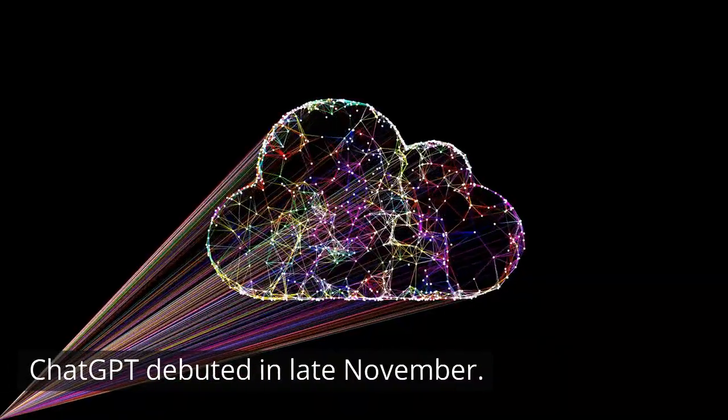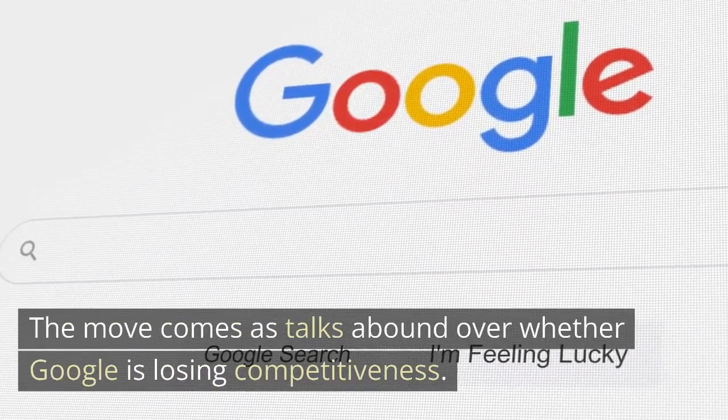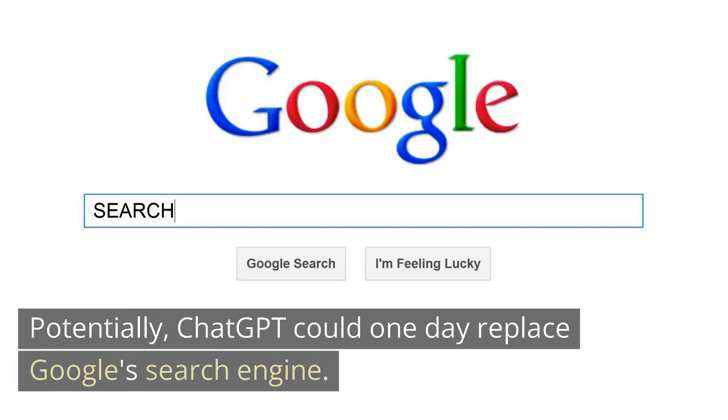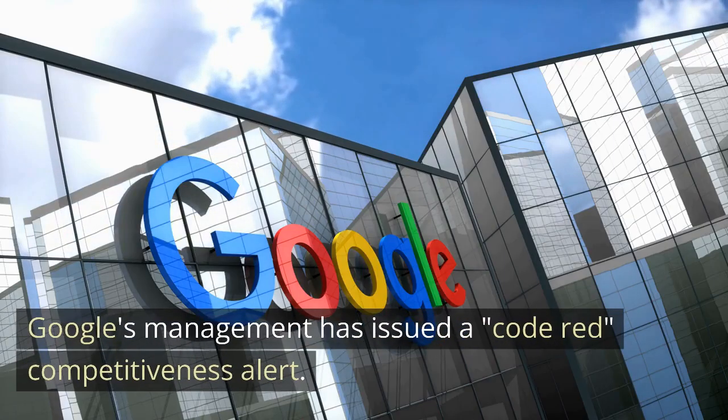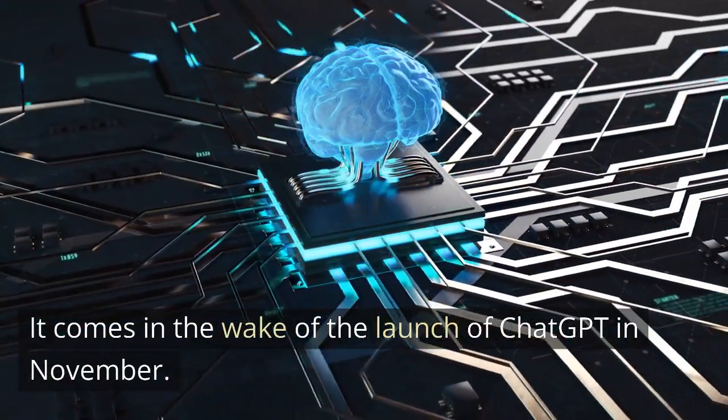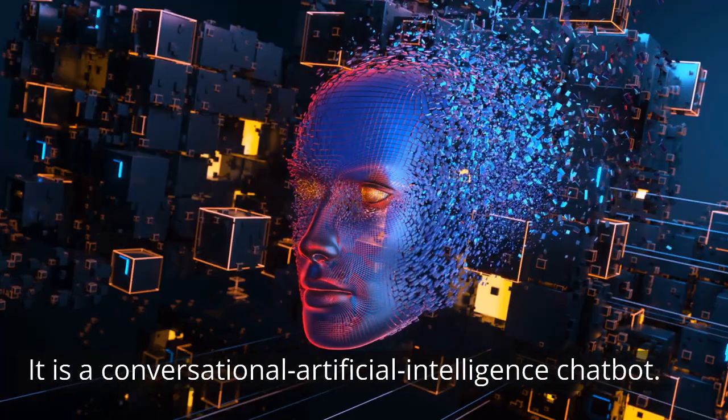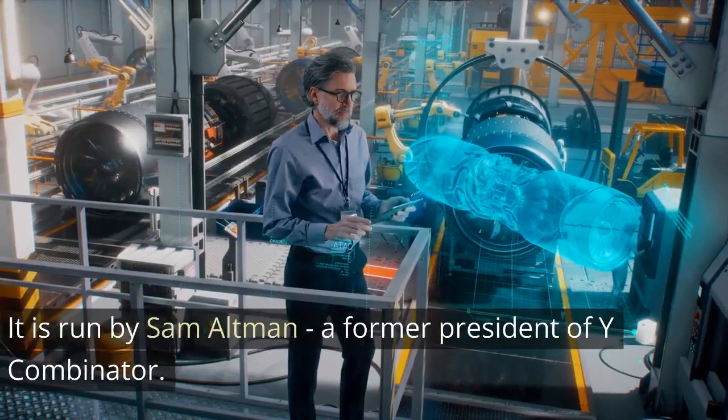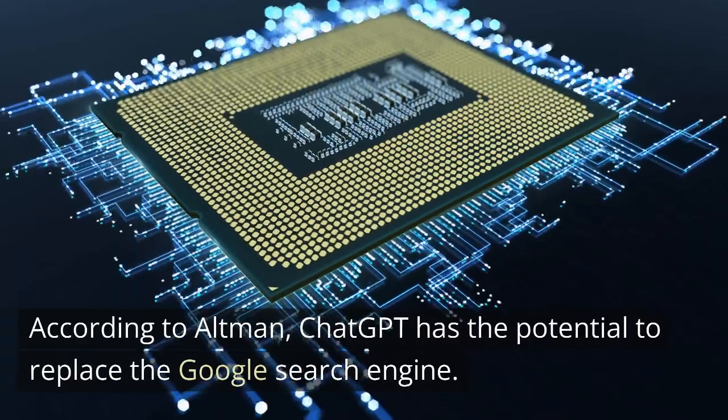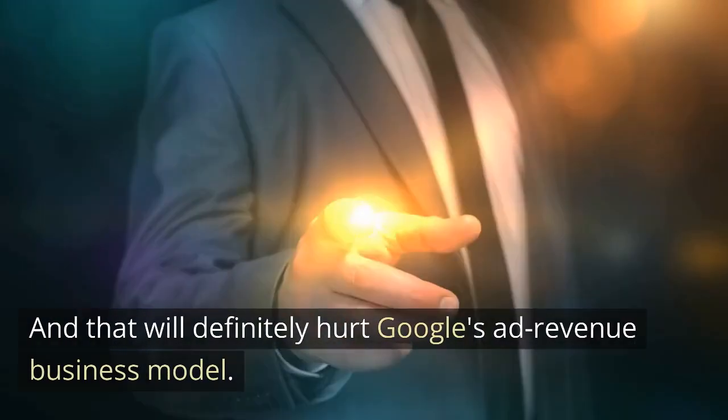ChatGPT debuted in late November and it quickly became a viral sensation. The move comes as talks abound over whether Google is losing competitiveness. Potentially, ChatGPT could one day replace Google's search engine. Google's management has issued a code-red, competitiveness alert. It comes in the wake of the launch of ChatGPT in November. ChatGPT has become incredibly popular in just one month. It is a conversational artificial intelligence chatbot. It is run by Sam Altman, a former president of Y Combinator. According to Altman, ChatGPT has the potential to replace the Google search engine. And that will definitely hurt Google's ad revenue business model.